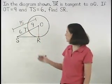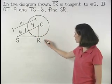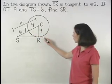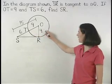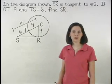And since we're given that OT equals 9, we know that OR must also equal 9, since OT and OR are both radii of circle O, and all radii of a circle are congruent.